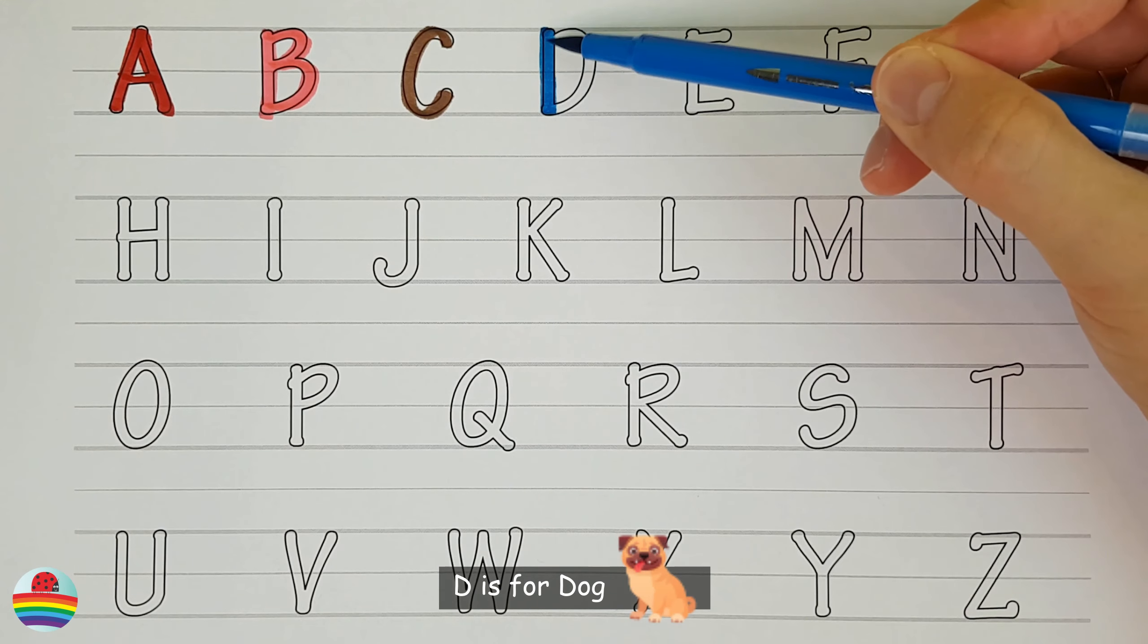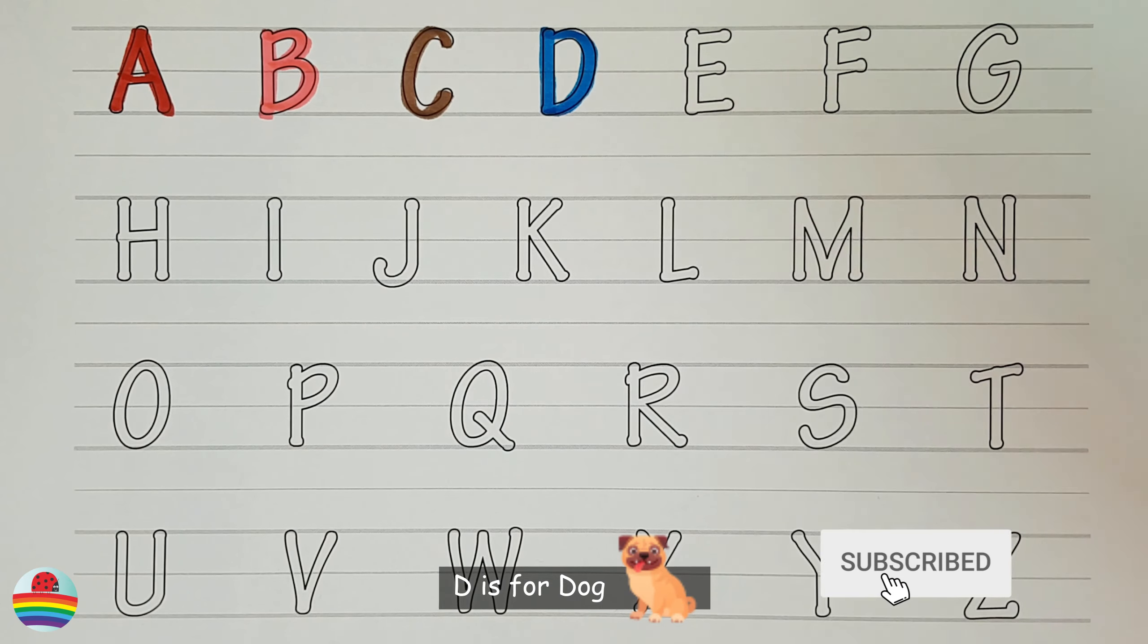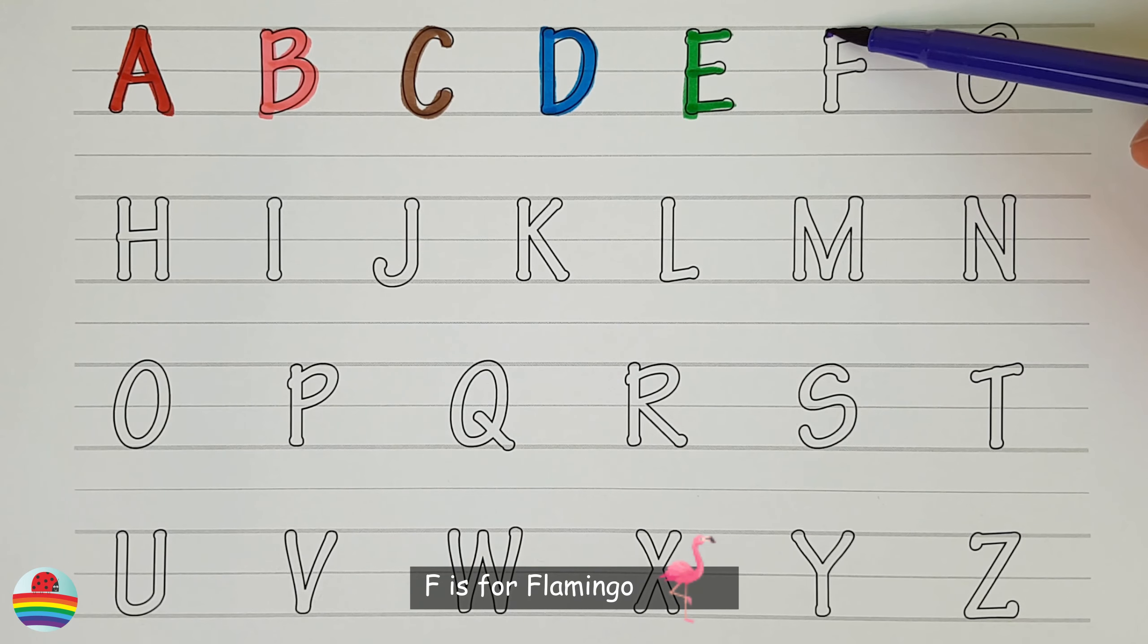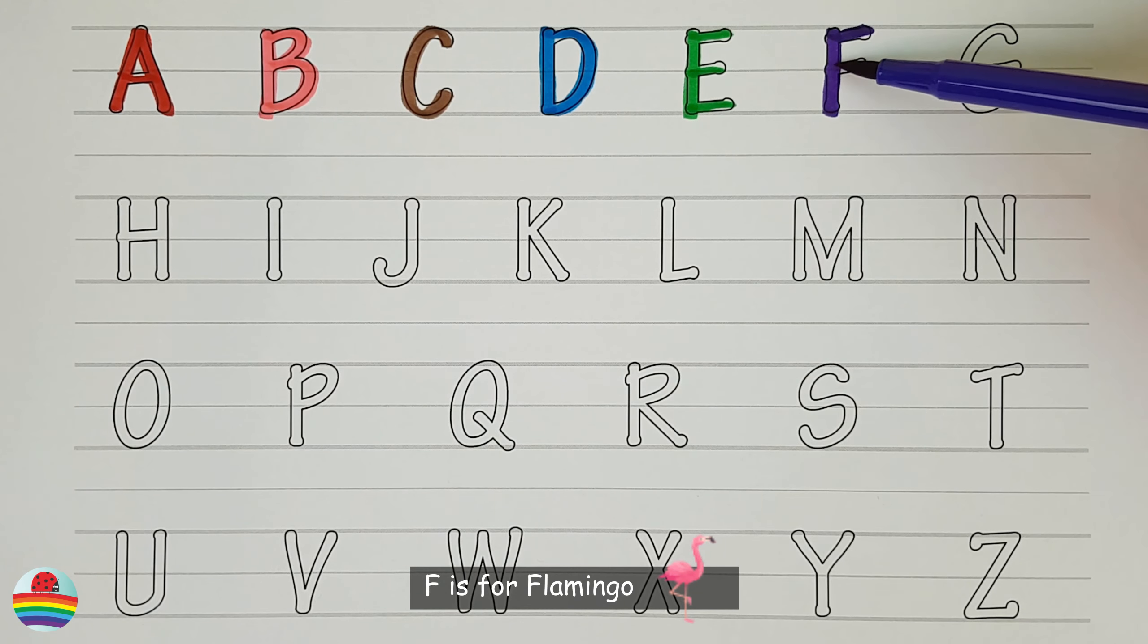D. D is for Dog. D. E. E is for Egg. F. F is for Flamingo. F.